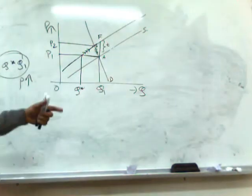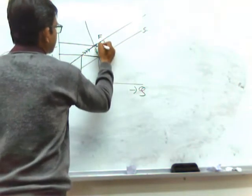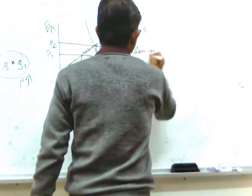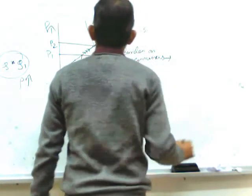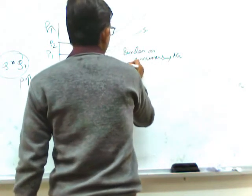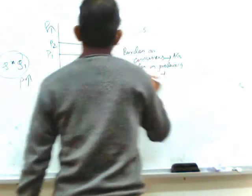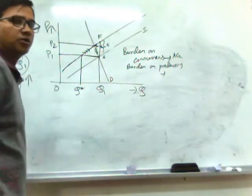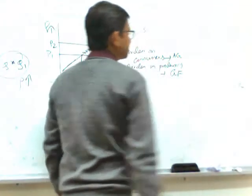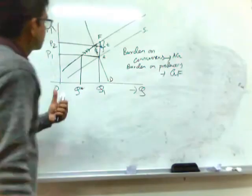AF is the per unit burden of tax. The burden on consumers is AG, and the burden on producers is GF. So AF is the per unit volume of tax, the price rises by AG, and GF is the burden on the producers. As the price elasticity of demand is very low, the producers can transfer a large burden to the consumers.